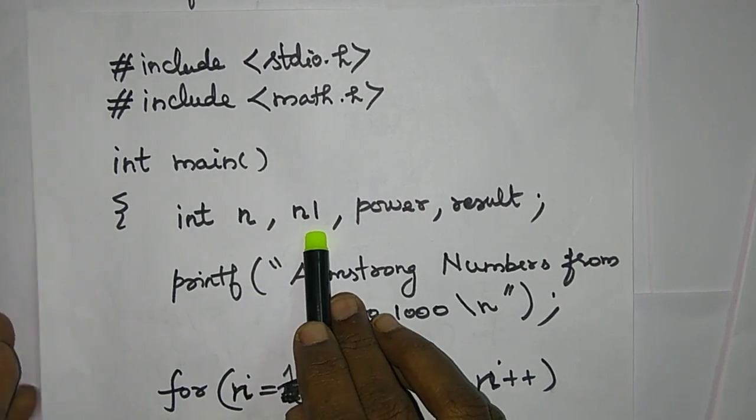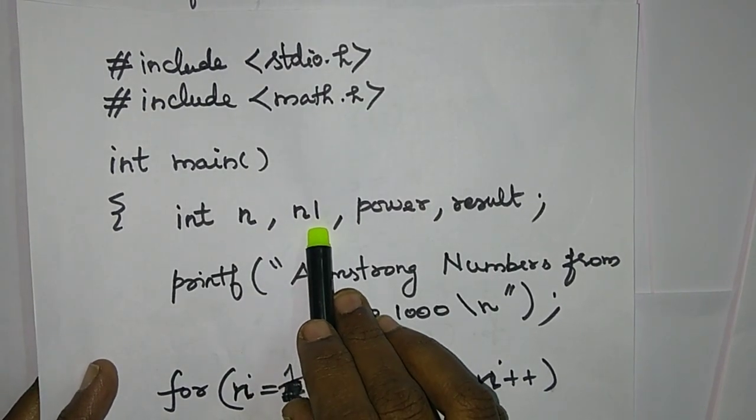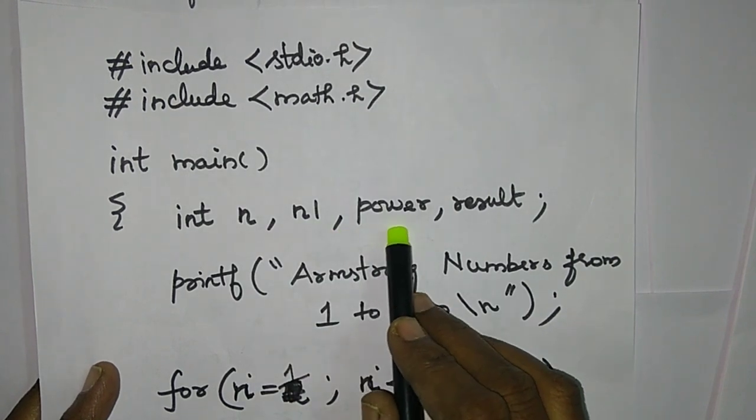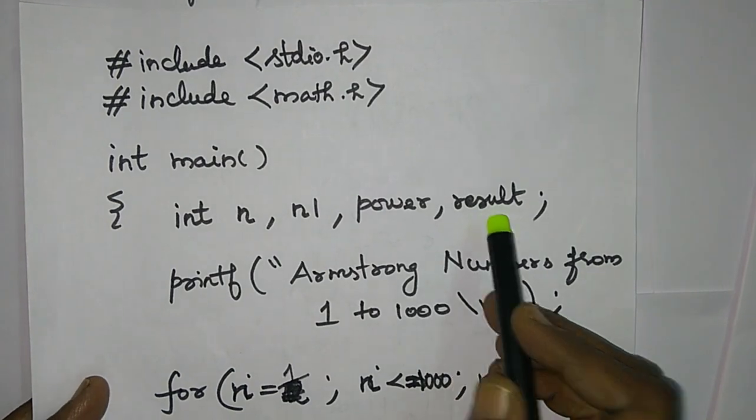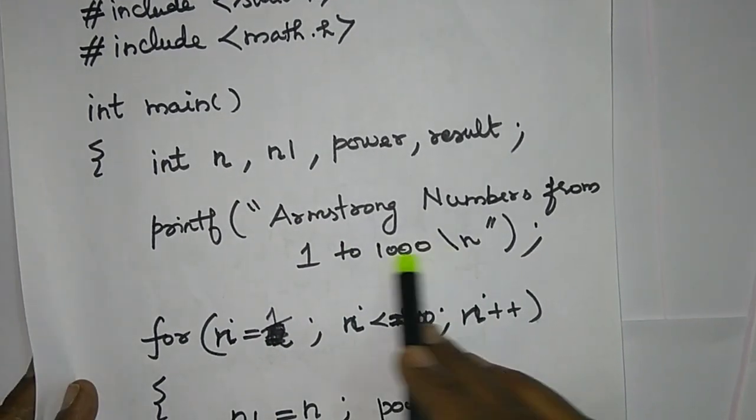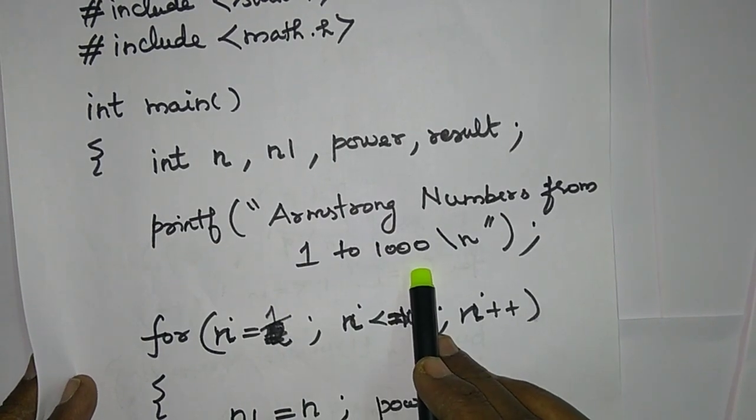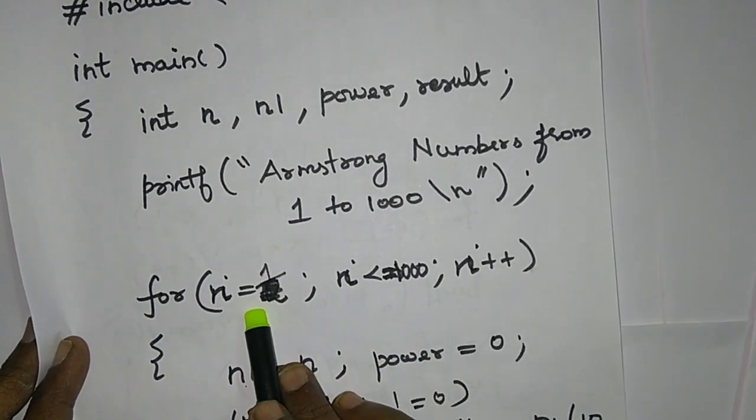The original number is n, n1 duplicate number. We will use n for number of digits. We will use the result. First step, we will print a heading. Armstrong number is from 1 to 1000. We will use the same concept.